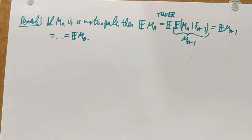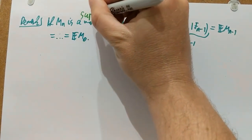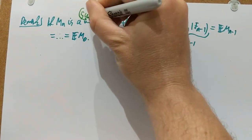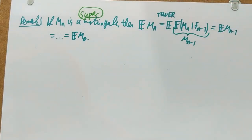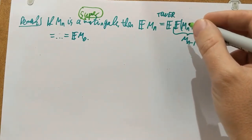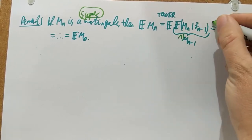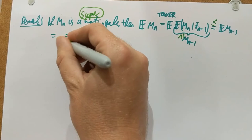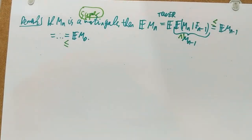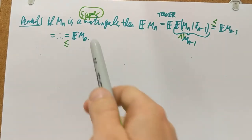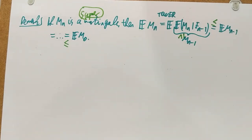If I have a supermartingale, then instead of equalities I'm going to have inequalities. E[M_{N+1}] ≤ E[M_N], so here I have less-than-or-equal at each step, and E[M_N] ≤ E[M_0].